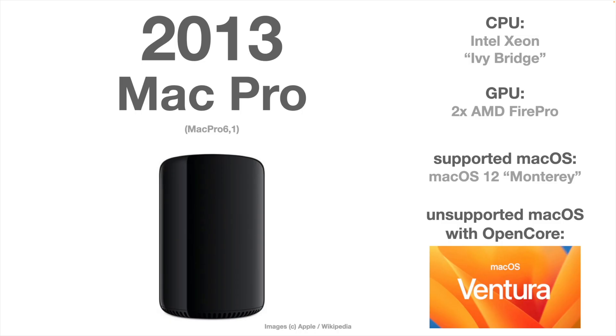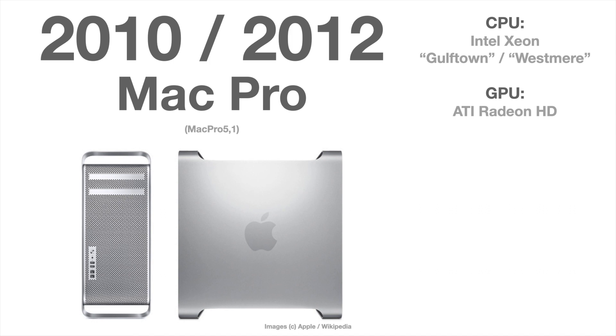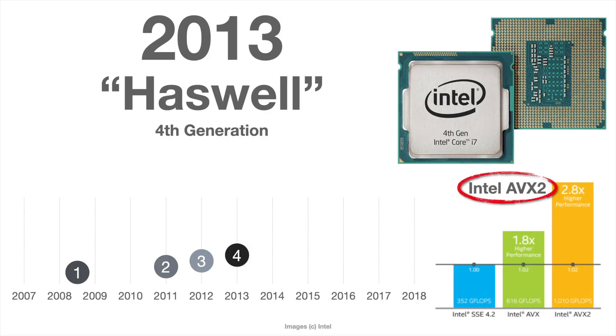The Mac Pro starts from 2013, and the question is: what about the beloved cheese grater — the Mac Pro 5,1, 4,1, and 3,1 from 2008 to 2012 — because that's the most popular model. The problem is that Apple dropped all CPUs that don't have the AVX2 instruction set. This instruction set is needed especially for graphics drivers and some other basic macOS features.